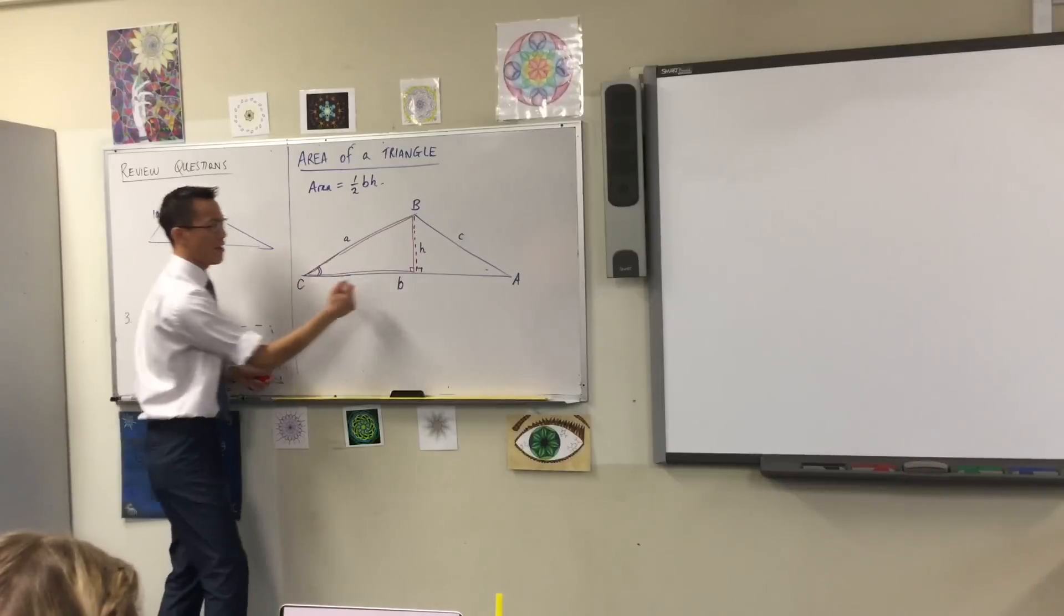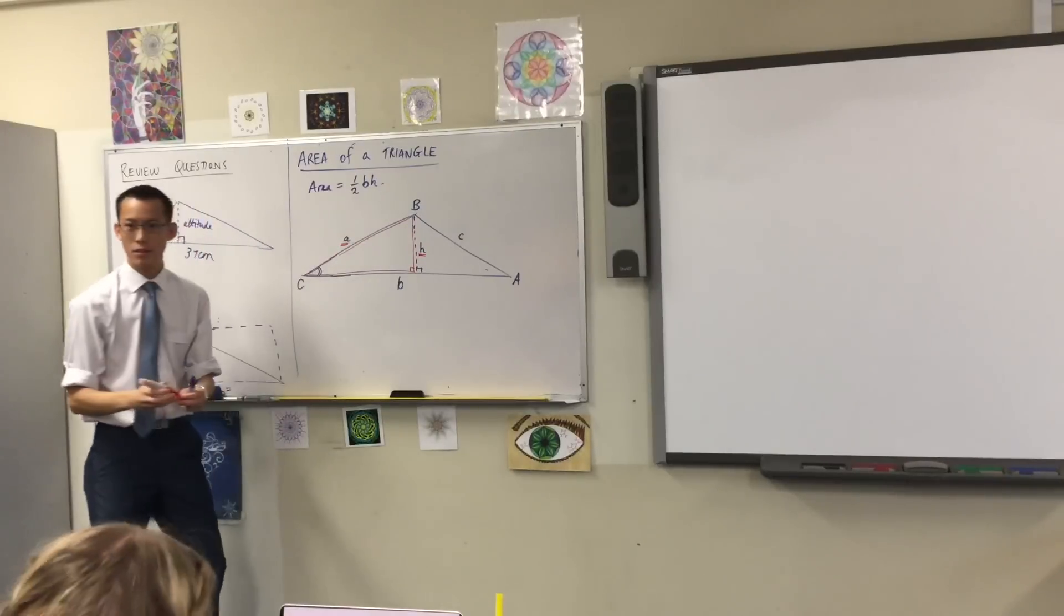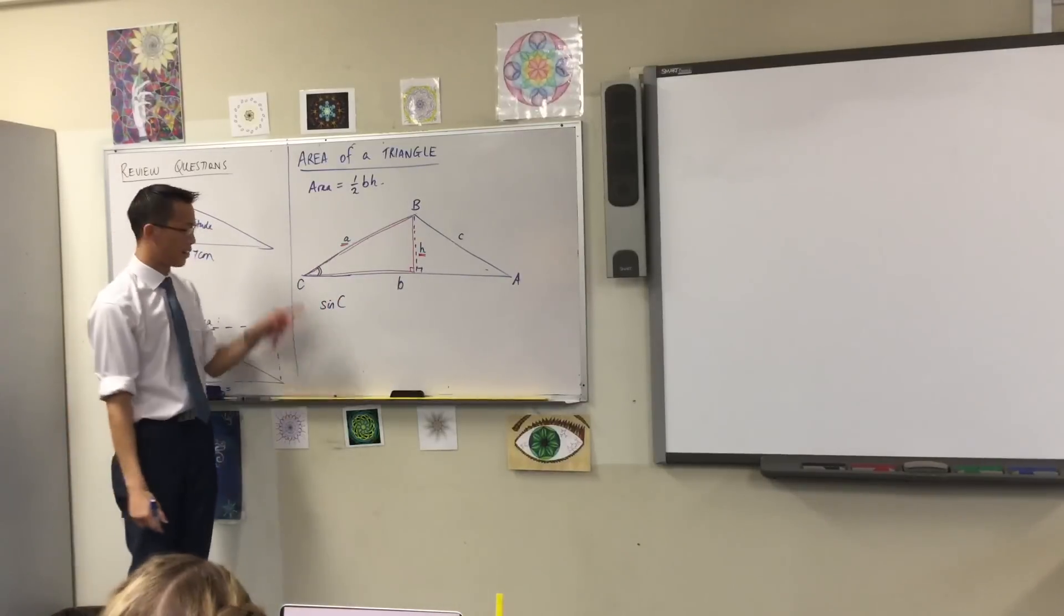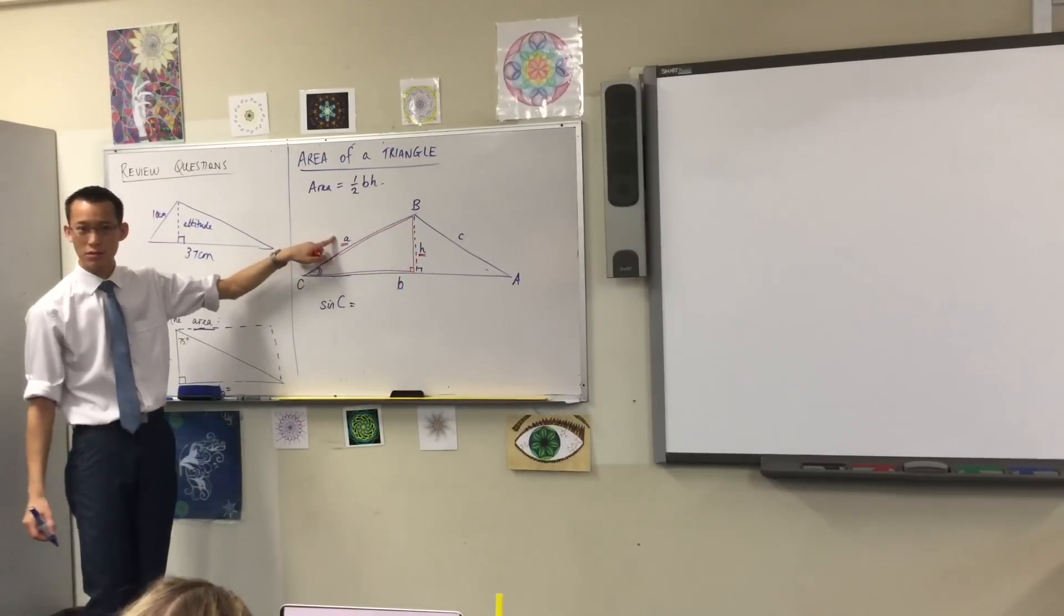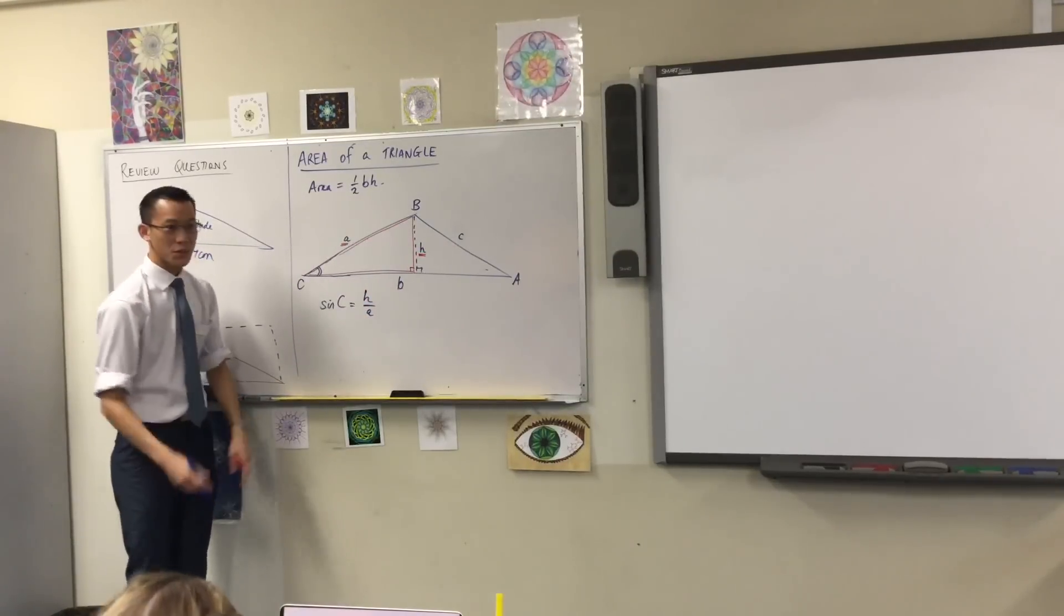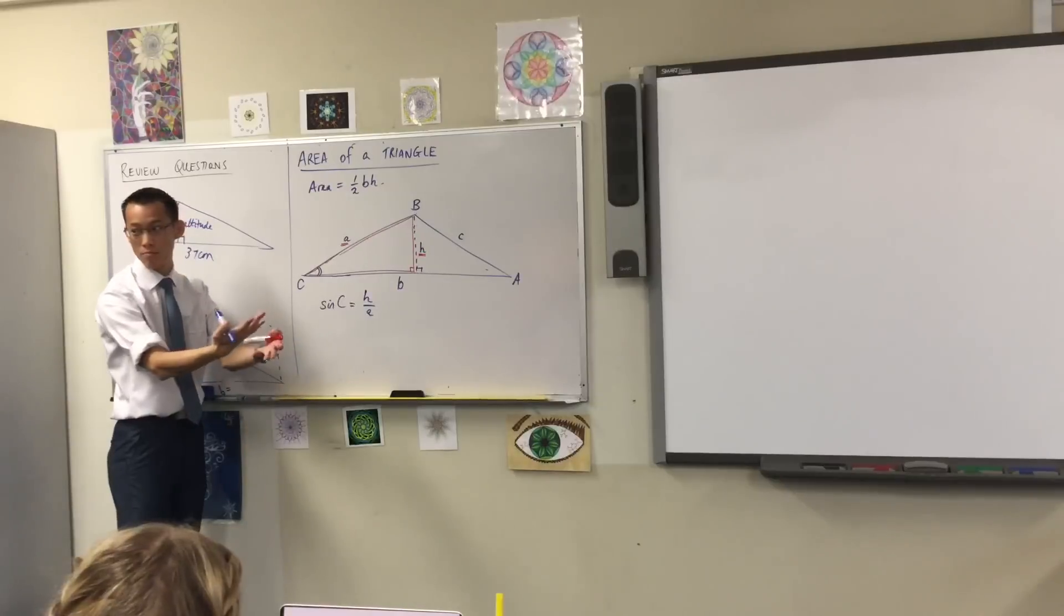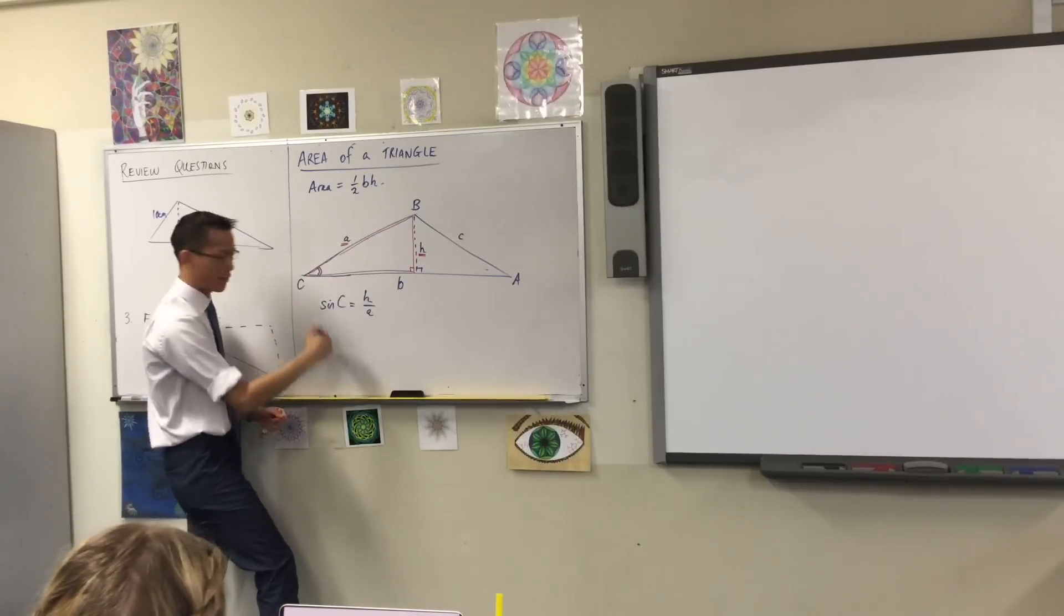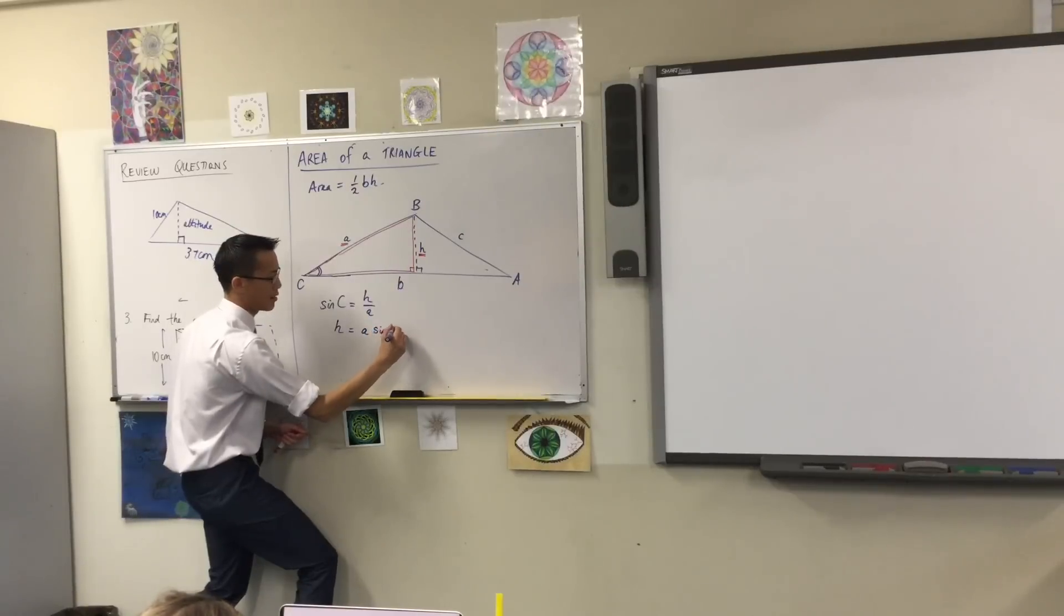Because look, from this angle, the side you want is opposite, and the side you know is the hypotenuse. So I'm going to say sine of this angle that I'm looking at, C, is equal to opposite on hypotenuse. Okay, so that's H over A. Okay? So far so good. So if all I want is the altitude, I'm just going to multiply both sides by A. And that will leave the H on its own. Okay? So it's going to be on its own, I'll put it over on the left as well.